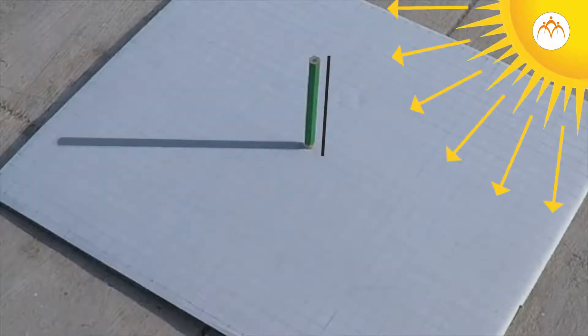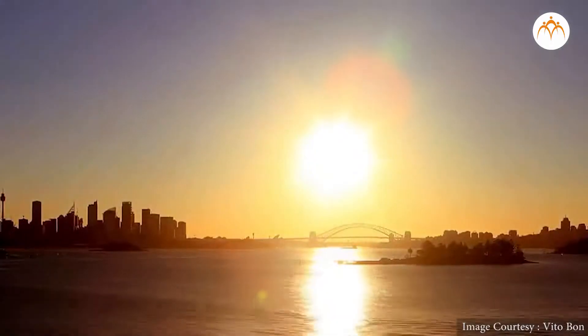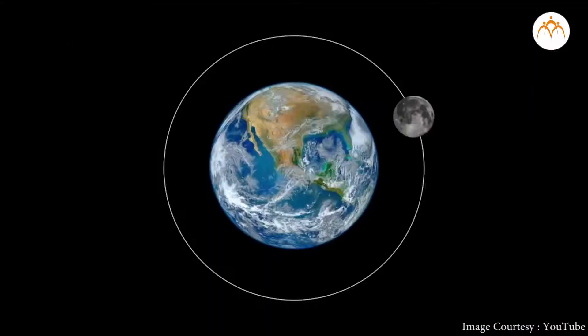We learned how shadows are formed. Let's explore how the formation of shadows plays a role in a very important event: eclipse. The sun is the main source of light. Earth revolves around the sun. The moon revolves around the earth.